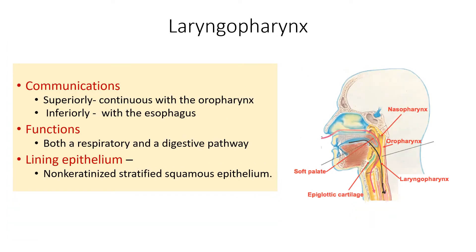Regarding the communications of the laryngopharynx: superiorly it is continuous with the oropharynx, and inferiorly with the esophagus. The functions of the laryngopharynx are that it serves as both a respiratory and digestive pathway. Air enters through the nostrils, passes through the nasal cavity, nasopharynx, oropharynx, and laryngopharynx, then goes anteriorly into the larynx. Food enters through the oropharynx, passes through the laryngopharynx, and goes posteriorly into the esophagus. The lining epithelium of the laryngopharynx is stratified squamous non-keratinized epithelium.